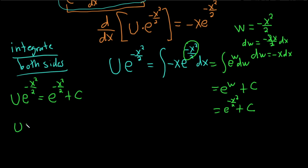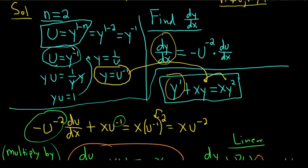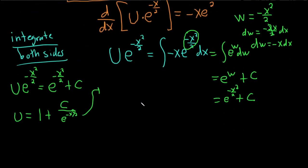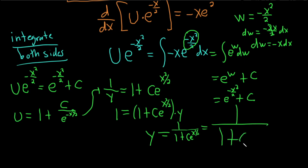So we have u times e to the negative x squared over 2 equals e to the negative x squared over 2 plus C. Dividing everything by e to the negative x squared over 2 gives u equals 1 plus C times e to the x squared over 2. But u equals y to the negative 1, which is 1 over y. So 1 over y equals 1 plus C e to the x squared over 2. Multiplying by y and dividing by the right side gives the final answer: y equals 1 over 1 plus C e to the x squared over 2.